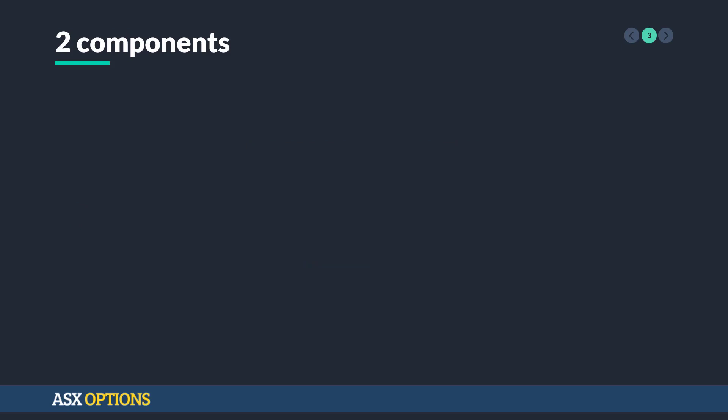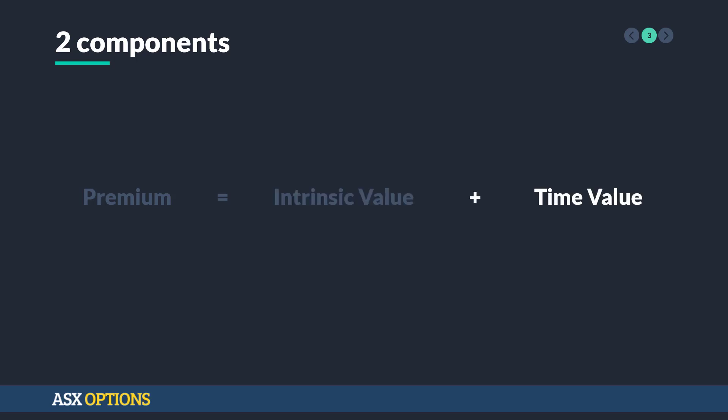There are two main components that we like to think of when we think of premium. One is the intrinsic value — this is kind of like the value that the contract has right now. And then time value, which is the future value that the contract could potentially have.